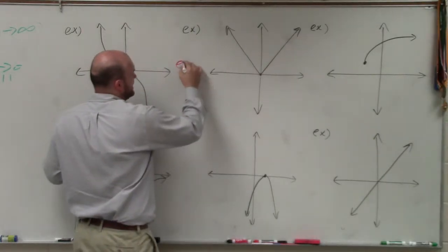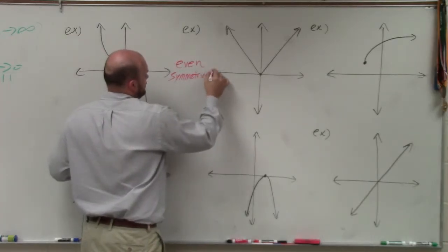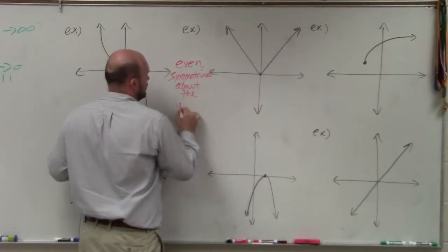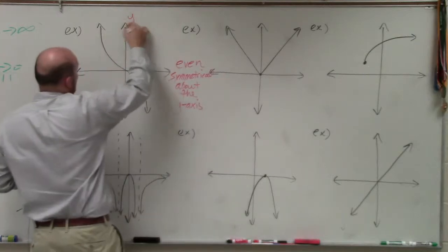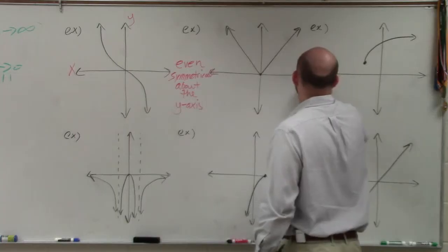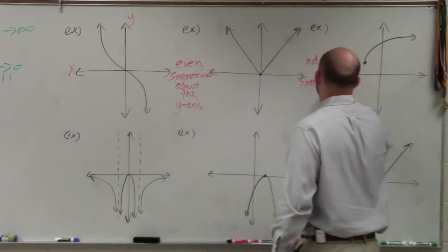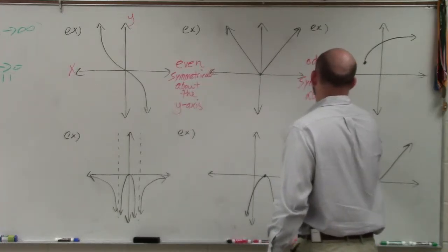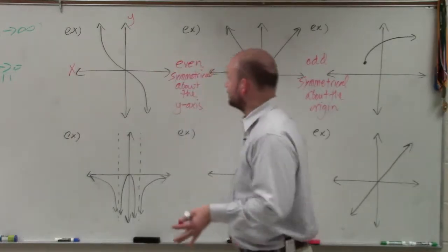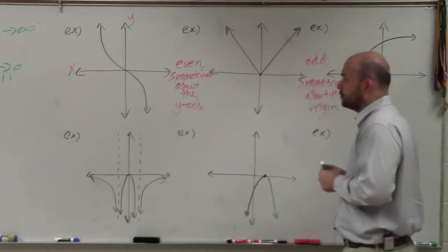If a function is even, then it is symmetrical about the y-axis. If a function is odd, then it is symmetrical about the origin. To represent symmetry about the origin, we can reflect over the x-axis and reflect over the y-axis — both reflections together represent symmetry over the origin.